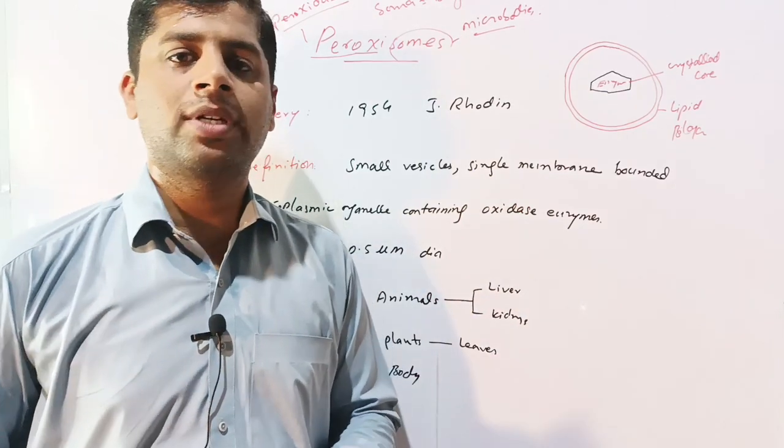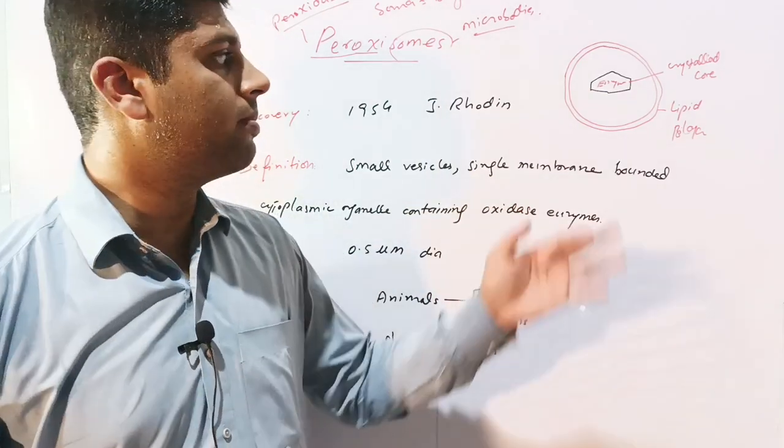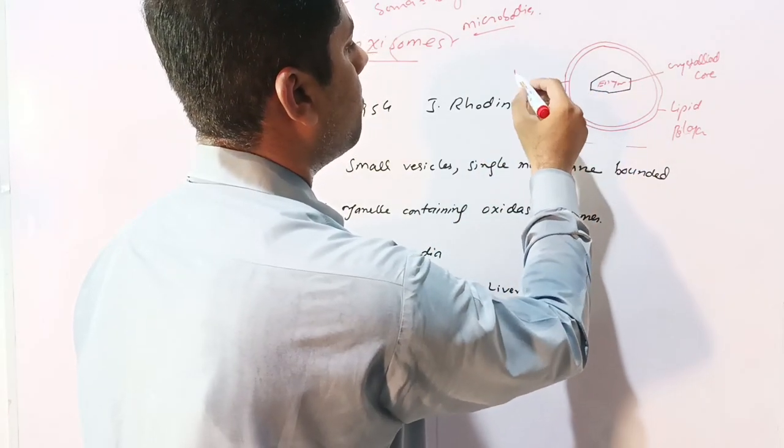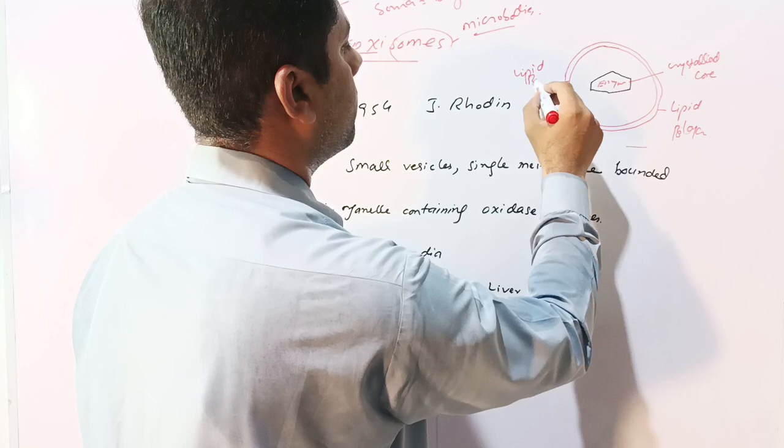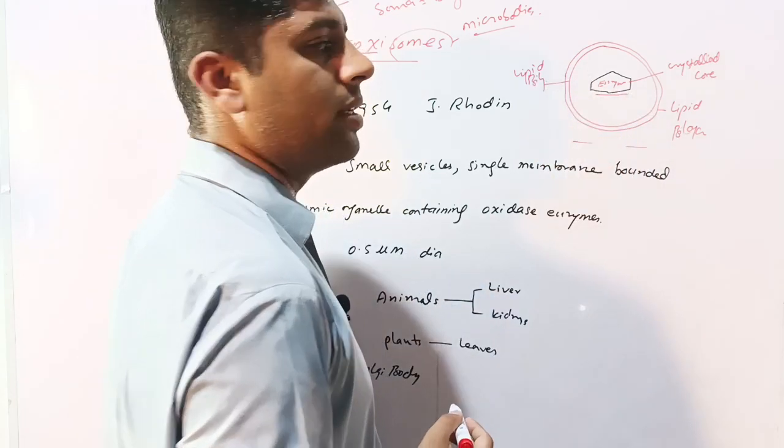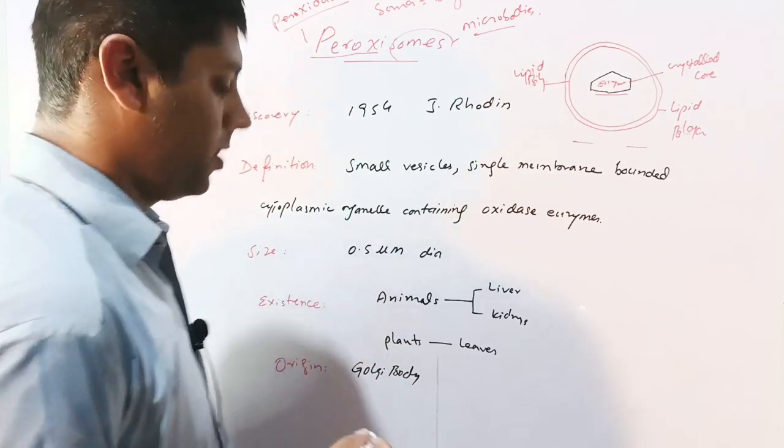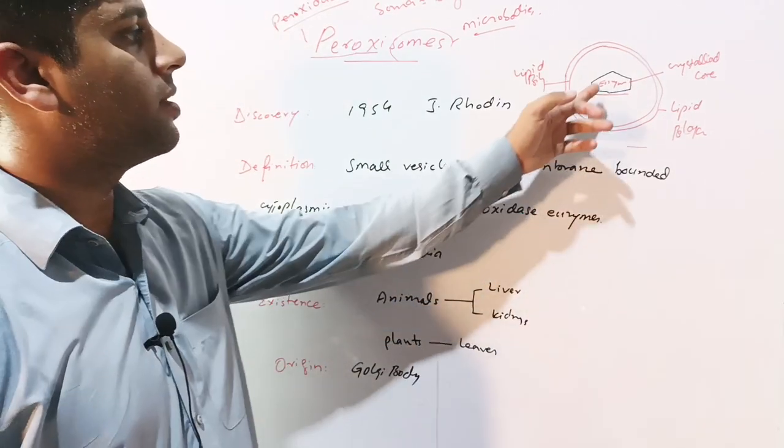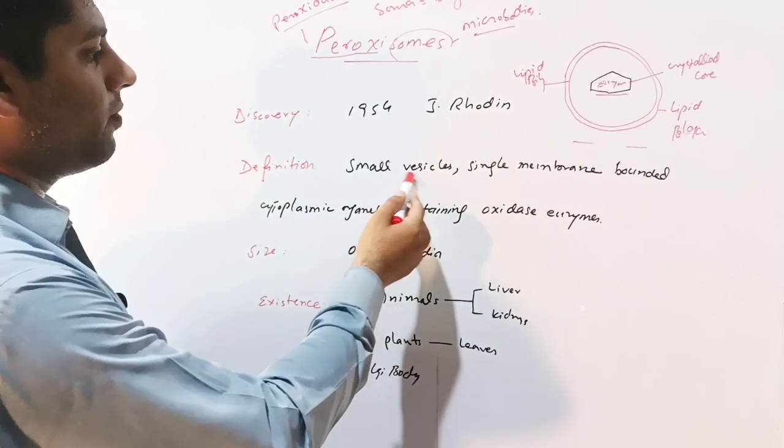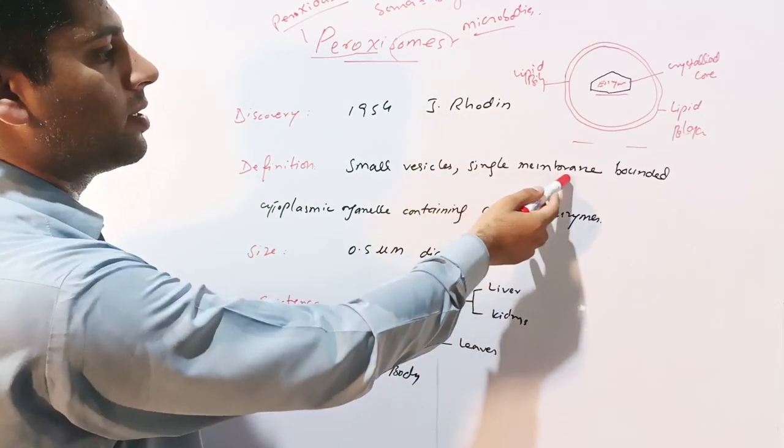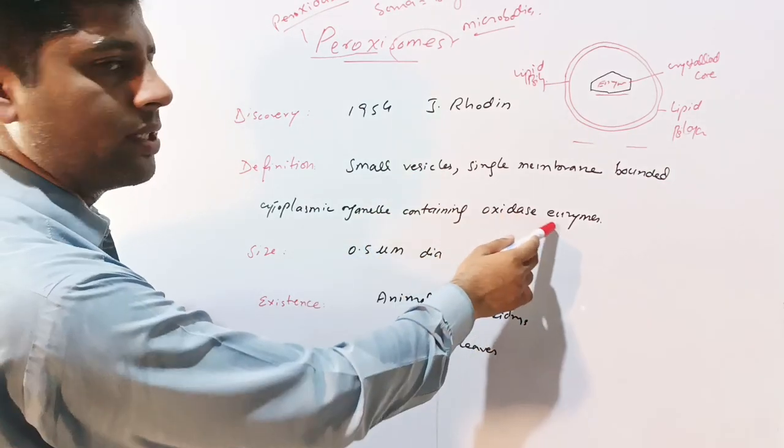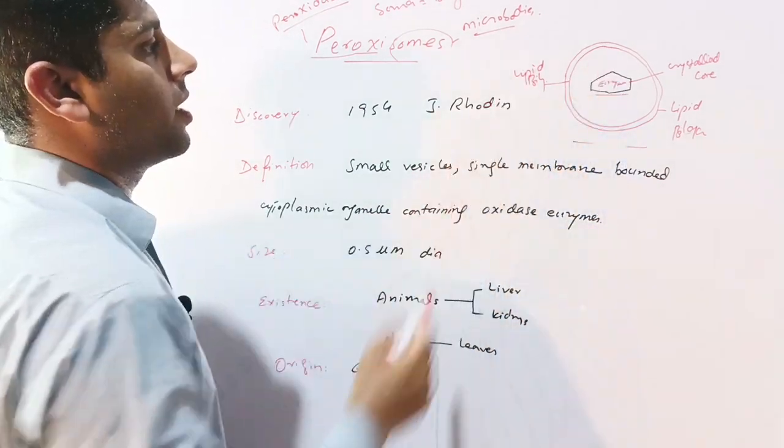Peroxisomes are cytoplasmic organelles with a single membrane-bounded structure. They have a lipid bilayer membrane with a crystallite core containing peroxidase enzymes. These small vesicle-like structures are single membrane organelles containing oxidase enzymes in their crystallite core.